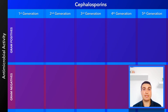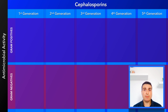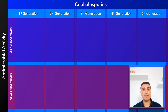The cephalosporins are categorized into five generations. Although there are a few exceptions, each antibiotic within a generation has a similar spectrum of activity. So if you can remember which bacteria are covered by five individual cephalosporins — one for each generation — then you'll have a pretty good idea of which organisms the cephalosporins are active against.